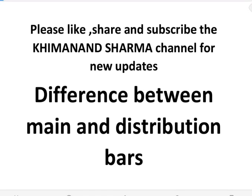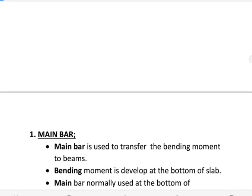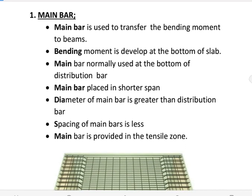Welcome to Khiman Dharma channel. Today's topic is: what is the difference between main bars and distribution bars in a slab? Let's start. Main bars are used to transfer the bending moment to beams. Bending moment is developed at the bottom of the slab, so main bars are normally placed at the bottom.